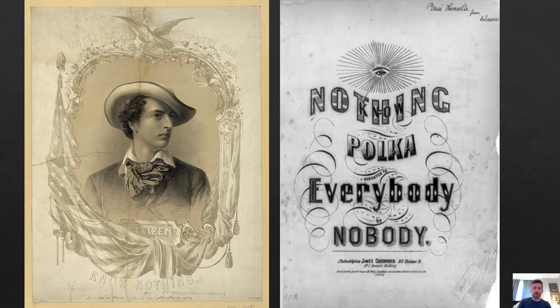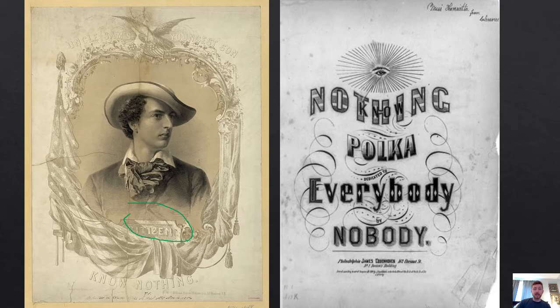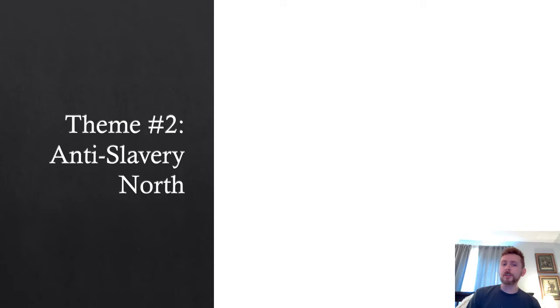The ideal Know Nothing citizen — look here. This is a very romantic sort of image, quintessential late 1840s to early 1850s. He's supposed to look intelligent — look at this brow, this forehead. He's got a face that says, 'I'm white and Protestant and proud.' There was even Know Nothing music: the Know Nothing Polka, dedicated to everybody by nobody.